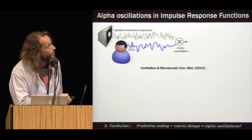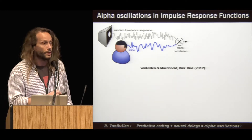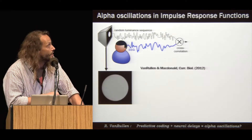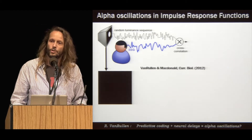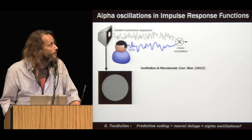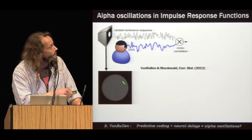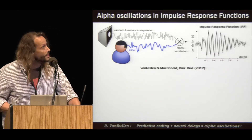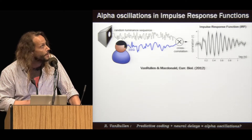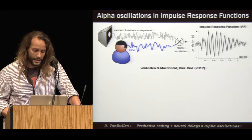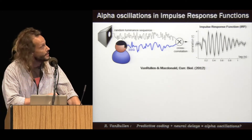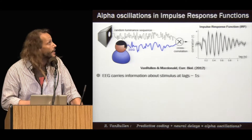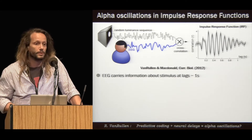In practice, we record EEG from human subjects while they observe a random luminance sequence on a screen. The stimulus has no interesting spatial structure, just a lot of temporal fluctuations, and they're fully random. When you cross-correlate this random flickering stimulus with human EEG, what you see is a very strong 10 hertz oscillation in the IRF. Mathematically, this means that the average EEG response to a unit increment of luminance on the screen can last up to lags of about one second.